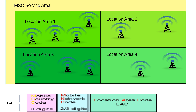Each location area can be made bigger or smaller. If it is bigger, you have more base stations in it, and if it is smaller you have fewer base stations. Now, what are the implications of having bigger or smaller location areas? If a location area is very small, containing one or two base stations, then whenever a mobile station leaves one location area and goes to another, it notifies the network that it has changed its location area. So if location areas are very small, there would be frequent location area updates and signaling load on the network would increase.